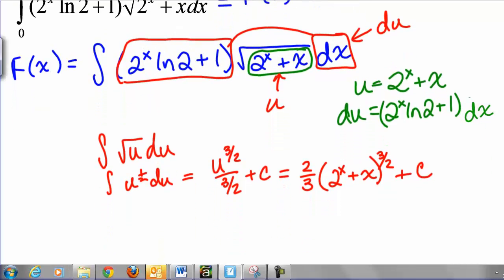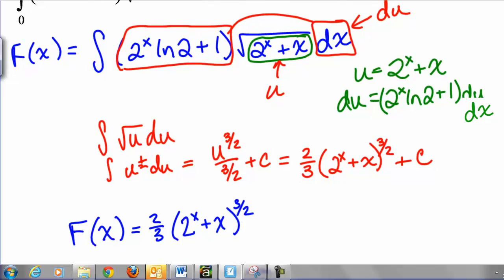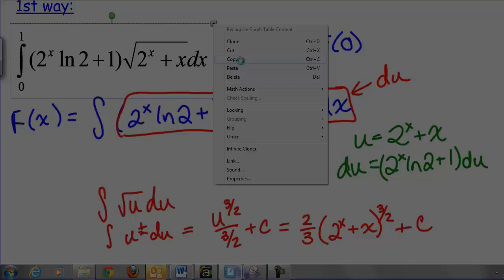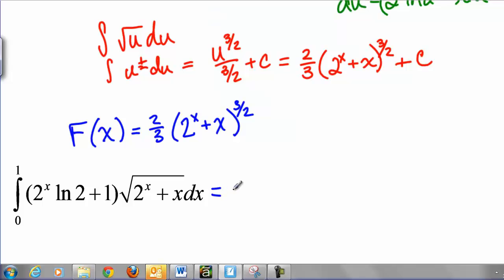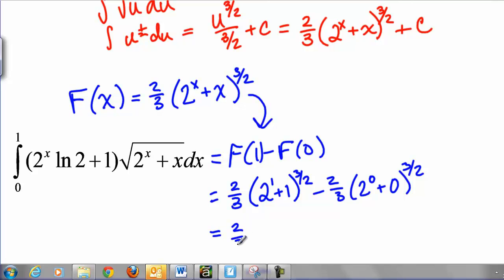So if we want one specific antiderivative, we can take capital F of X to equal 2/3 times (2 to the X plus X) to the 3/2. There's one specific antiderivative. And then if we want to find the integral from 0 to 1 of 2 to the X ln of 2 plus 1 times the square root of 2 to the X plus X dx, well, we found a general antiderivative of that. So we can say that the definite integral is capital F of 1 minus capital F of 0. So using our capital F now, we get 2/3 times (2 to the 1 plus 1) to the 3/2 minus 2/3 times (2 to the 0 plus 0) to the 3/2, which we can simplify to be 2/3 times 3 to the 3/2 minus 2/3.